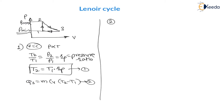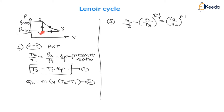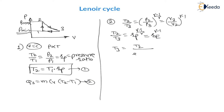The second process, 2 to 3, is reversible adiabatic expansion. The governing equation is T2/T3 = (P2/P3)^((γ−1)/γ) = (V3/V2)^(γ−1). Since P3 equals P1 (the minimum pressure), P2/P1 equals the pressure ratio Rp. Therefore, T2/T3 = Rp^((γ−1)/γ). The ratio V3/V2 is the expansion ratio RE, so it also equals RE^(γ−1). From this, T3 = T2 / Rp^((γ−1)/γ).